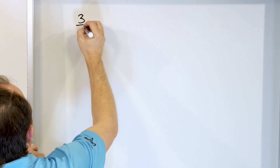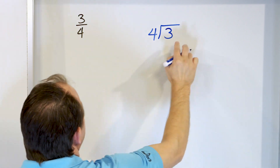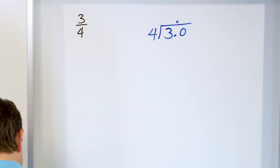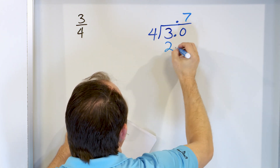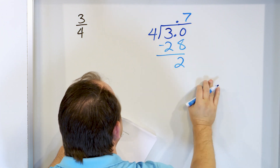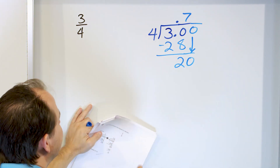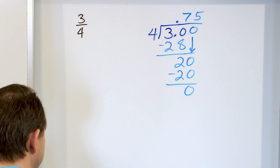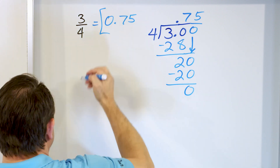Let's look at three fourths. We take three and divide by four, making it 3.0. Four times seven is 28 — subtract, 30 minus 28 is two. Add a zero to get 20. Four times five is 20, remainder is zero, we stop. So three fourths equals 0.75.